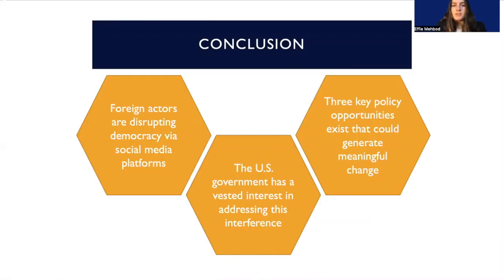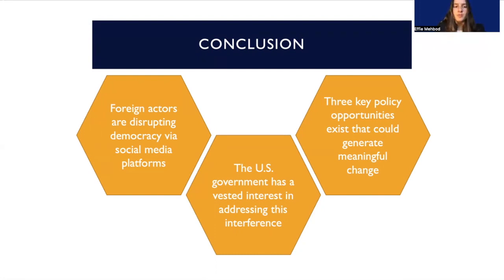My goal today was to discuss how we can further protect American democracy, specifically as it relates to foreign interference on American social media accounts, but also interference within Latin American social media accounts to protect democracy there as well. It's clear that foreign actors are disrupting democracy through these platforms. Russia is doing so, China has done so, and because of the low barriers to entry — given how cheap it is to interfere and conduct disinformation campaigns — it's reasonable to assume that other nations will begin to do the same. We need to begin to address existing loopholes within legislation through the recommendations I introduced, in order to further protect democracy and prevent this from happening again. The US government therefore has a vested interest in addressing the interference, because democracy is at stake both domestically and internationally.